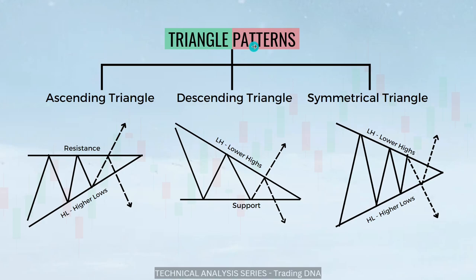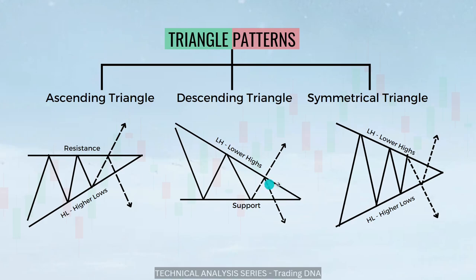Moving on to the next: triangle patterns. Triangle patterns are bilateral patterns, which means a breakout can occur in either direction. There are three types: ascending triangle, descending triangle, and symmetrical triangle. In the ascending triangle, the price has not gone above the resistance zone and is forming higher lows; whichever side the stock breaks, you can go for buying or shorting. In the descending triangle, the price continuously takes support and keeps forming lower highs; once the high is broken you can go long, and once the support is broken you can go short. As simple as that.